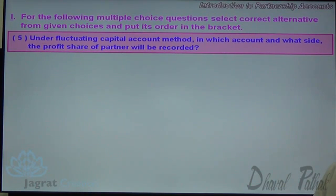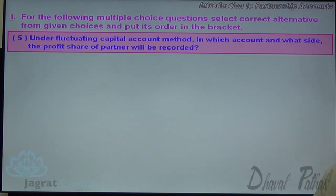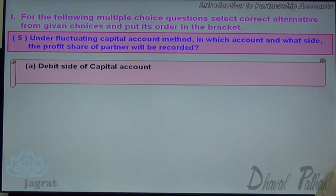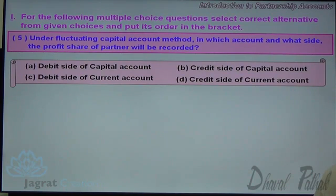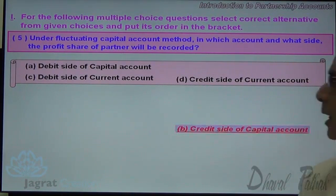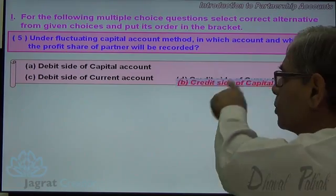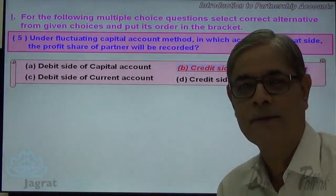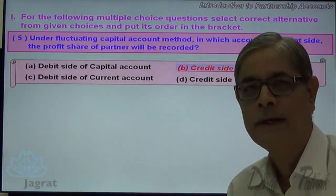Next. Under the fluctuating capital account method, in which account and on what side will the profit share of a partner be recorded? The profit is recorded to the credit side of the capital account. Option B — credit side of capital account — is the correct answer.